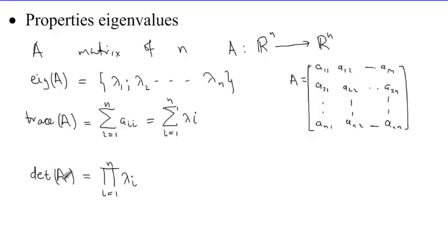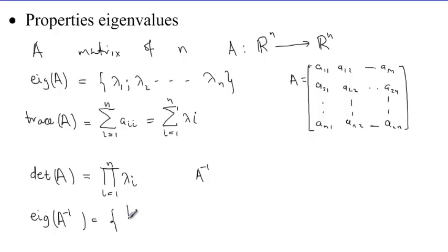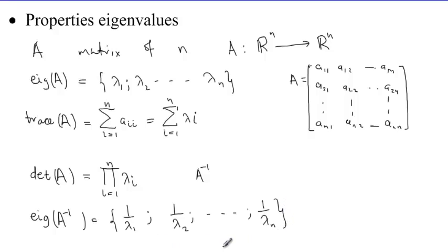These are properties of eigenvalues. If the matrix A is invertible, the set of eigenvalues of A⁻¹ is {1/λ₁, 1/λ₂, ..., 1/λₙ}. In other words, the eigenvalues of the inverse of A are the reciprocals of the eigenvalues of A.